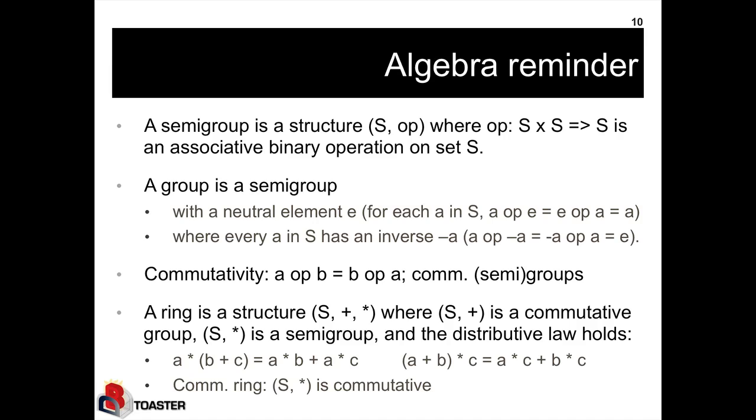A semigroup is a structure consisting of a base set S and an associative binary operation on S. A group is a semigroup that has a neutral element and an inverse. The neutral element means that there is an element e such that for any element a in S, a op e equals e op a equals a. And for every element a, the inverse minus a can be combined with a and always gives the neutral element. I can talk of commutative semigroups and groups if the operation is commutative, that means a op b is the same as b op a.